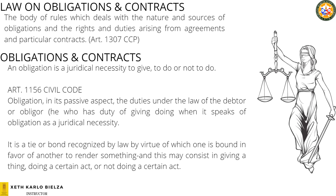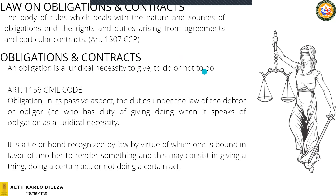We have the law on obligations and contracts. This is the body of rules which deals with the nature and sources of obligations and the rights and duties arising from agreements and particular contracts — that is the definition according to our civil code. An obligation is a juridical necessity to give, to do, or not to do. In its passive aspect, it covers the duties under the law of the debtor or obligor — it is a tie or bond.